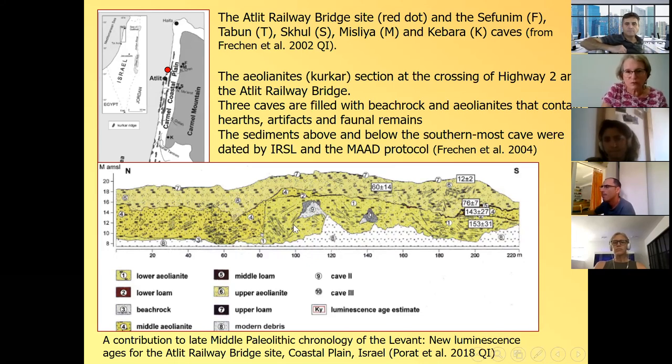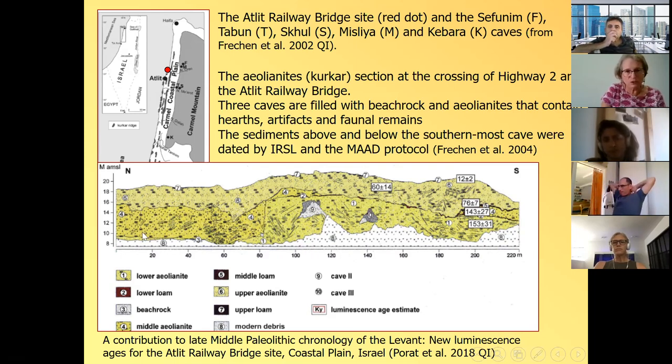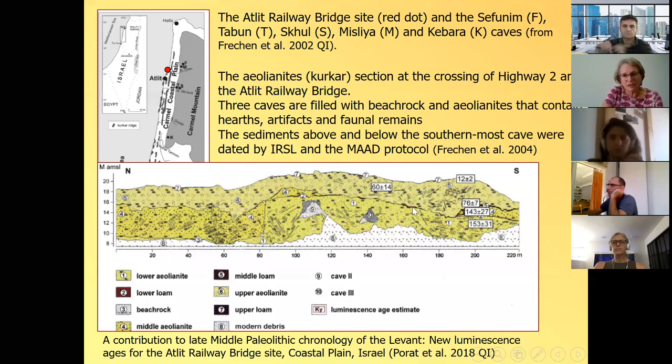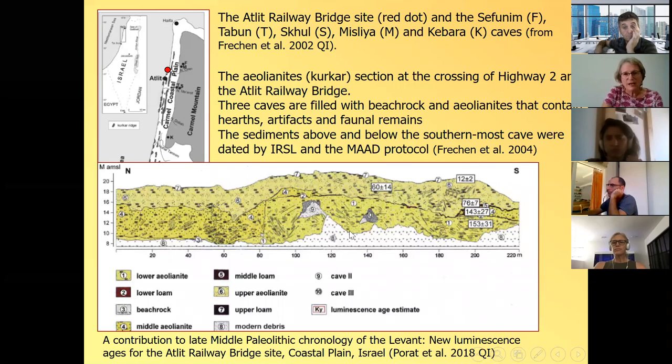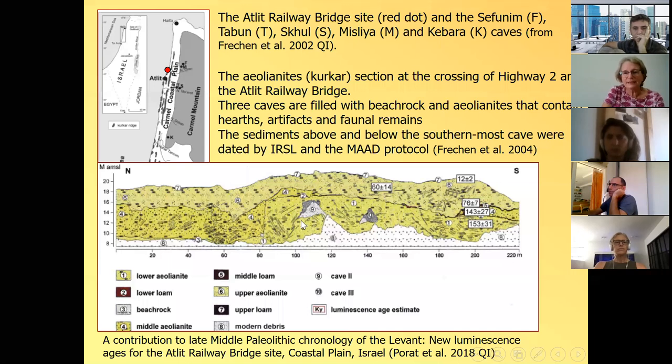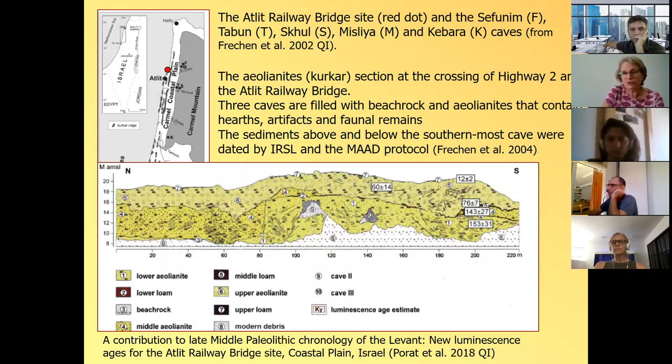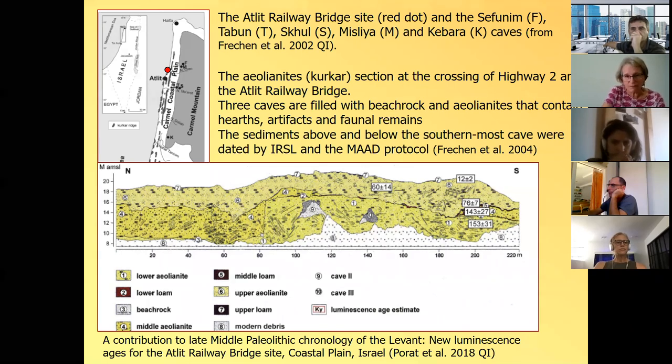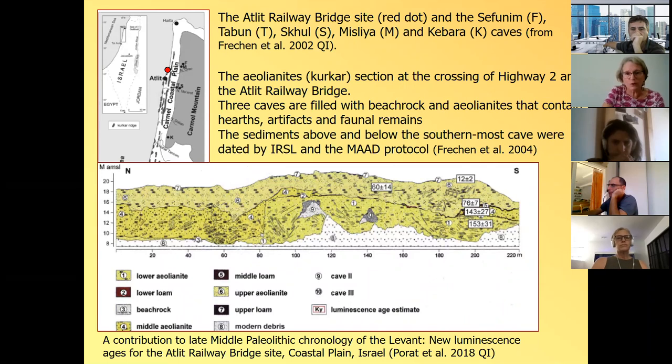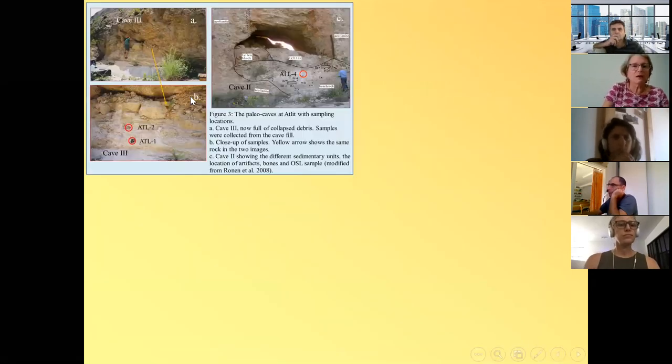And the multiple aliquot protocol. And these are the ages that they got, so like 150,000 years for the base of the section. And then the ages get younger towards the top. What you see here is one unit down here. Here's a kind of paleo beach cliff. And then this unit was deposited here, and everything was covered with another unit. And there are caves, three caves, one, two, and the third one is here, that developed inside this aeolianite, which is carbonate rich. And these caves have been filled with sediments, and aeolian sediments like beach rock, that contain hearths, artifacts, and fauna remains. And these are the focus of the dating. And if we look at it in the field, this is like the cave, and it is completely filled up.